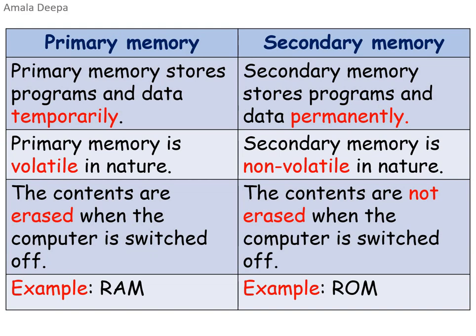Differences between primary memory and secondary memory: Primary memory stores programs and data temporarily; secondary memory stores them permanently. Primary memory is volatile in nature — contents are erased when the computer is switched off. Secondary memory is non-volatile — contents are not erased when switched off. An example of primary memory is RAM (random access memory). An example of secondary memory is ROM (read-only memory).